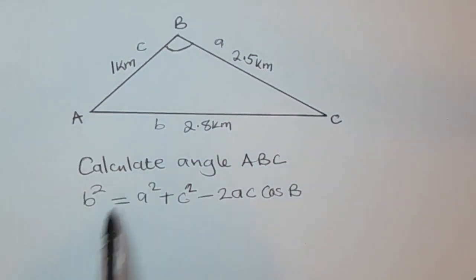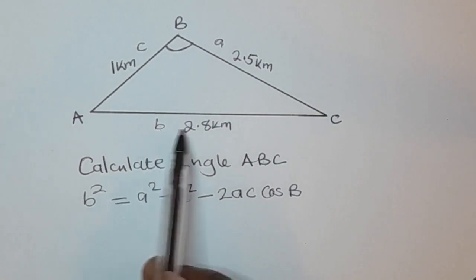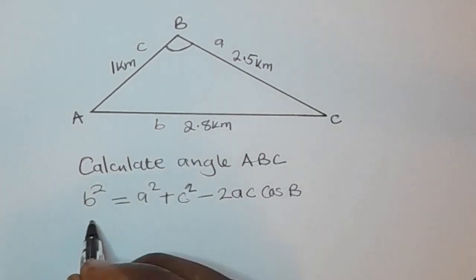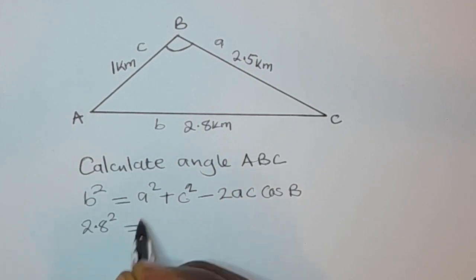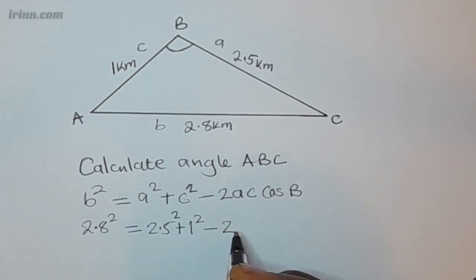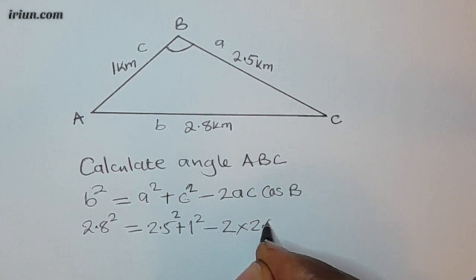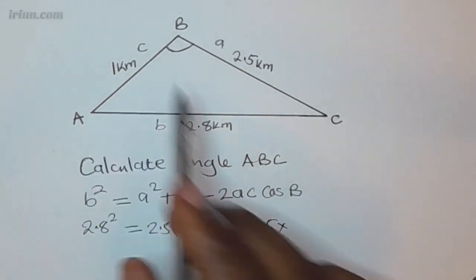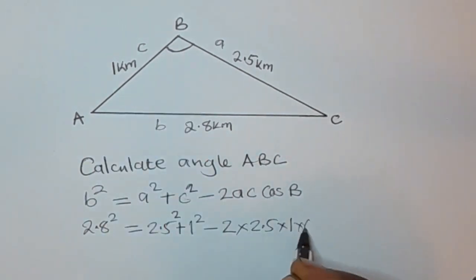Okay, next we just have to replace what is b. B is 2.8, so we are going to have 2.8 squared. This side is equal to a is 2.5 squared plus c is 1 squared minus 2 times a is 2.5 times c is 1, then times cos B.